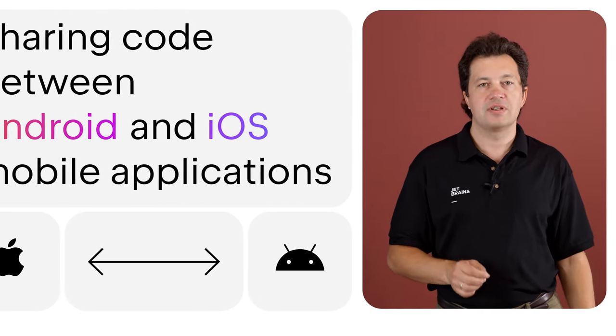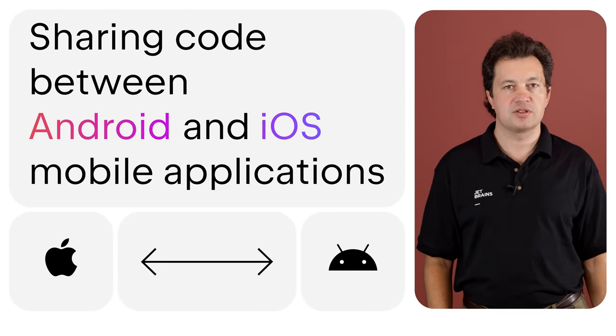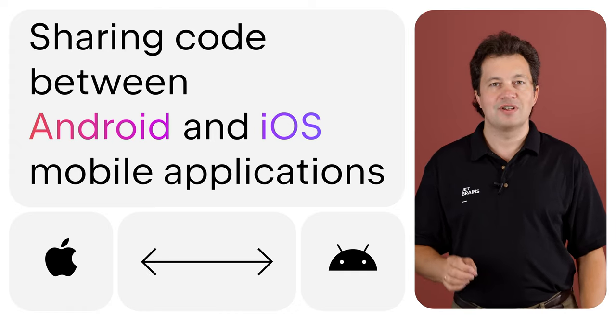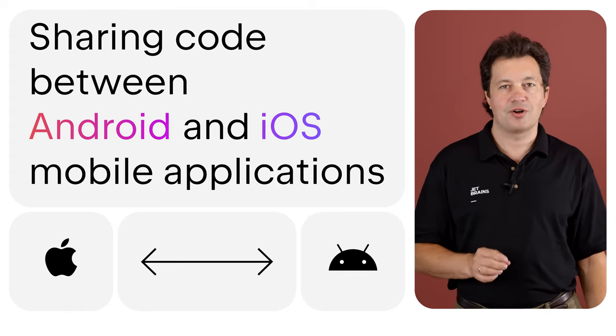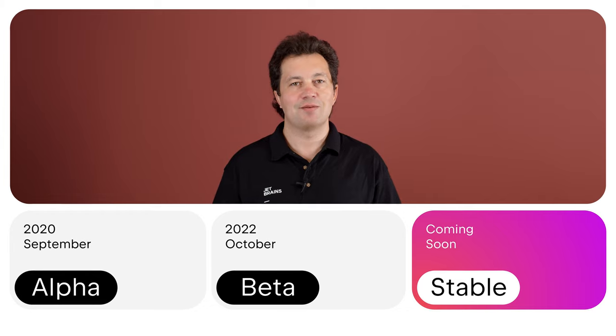This vision is grand. As the first step, we are focusing on polishing and stabilizing all the technology for Kotlin Multiplatform Mobile — that is, sharing code between Android and iOS mobile applications. We're happy to announce that this part has reached beta and it is on track to becoming stable.